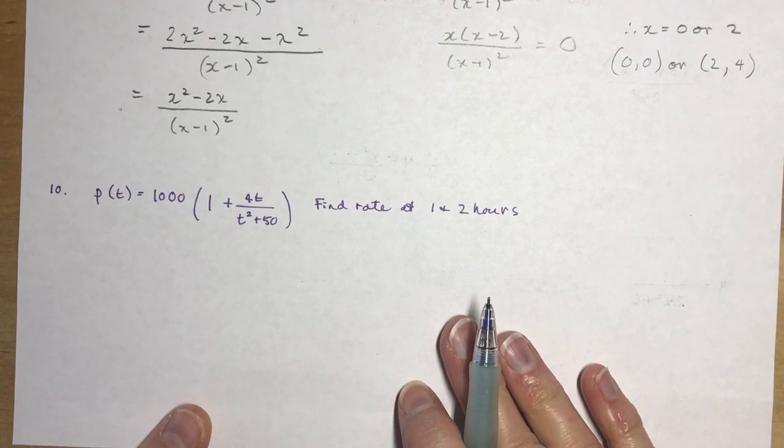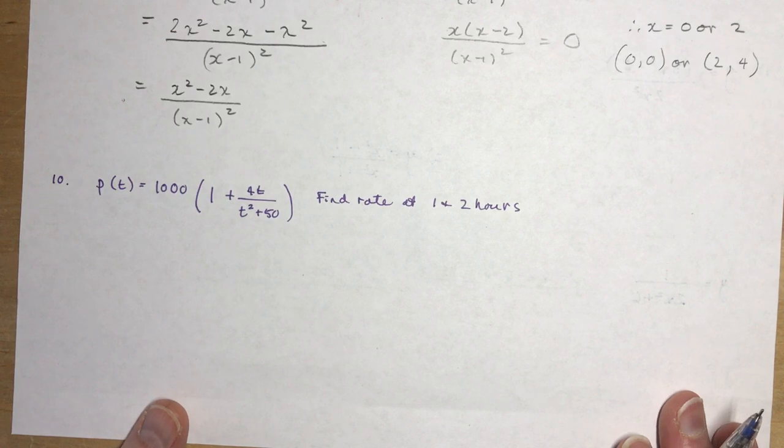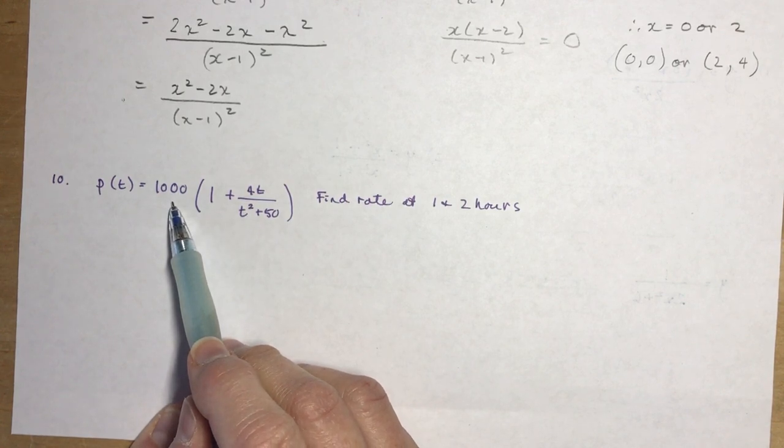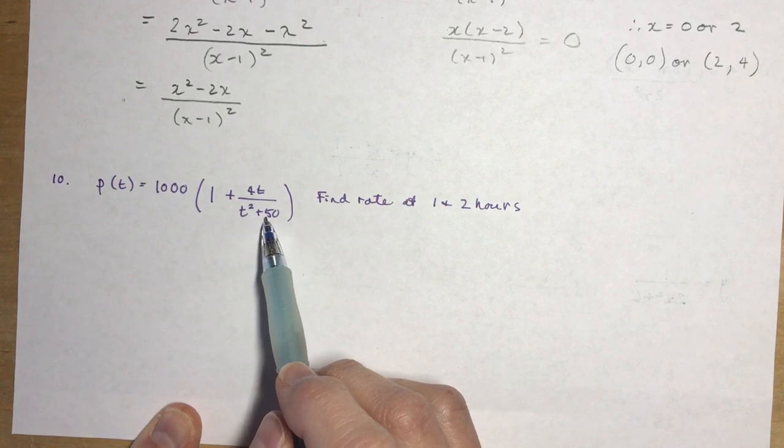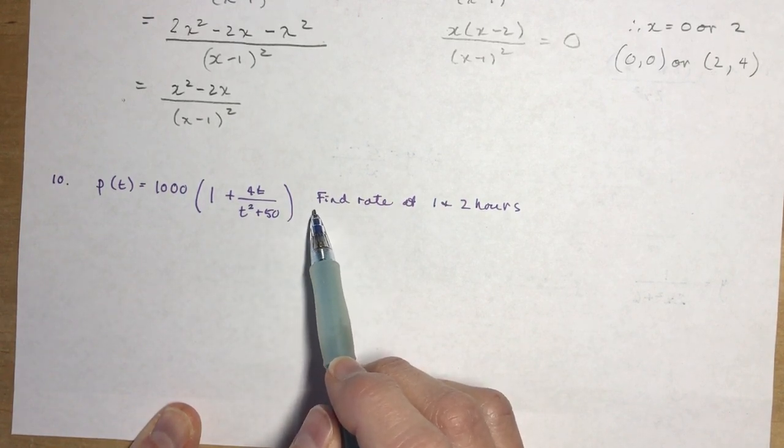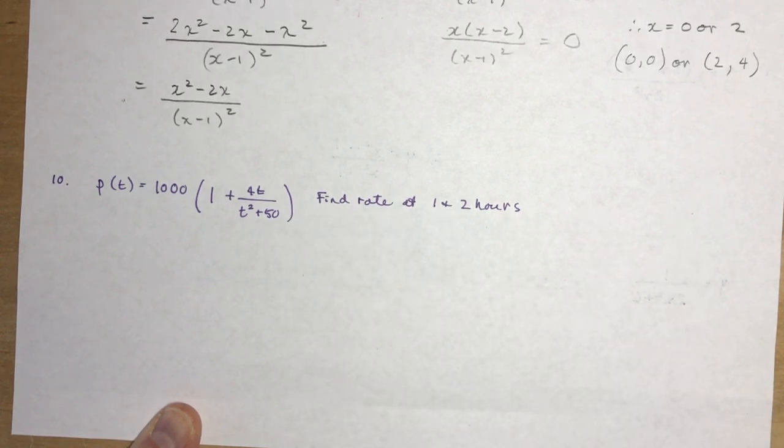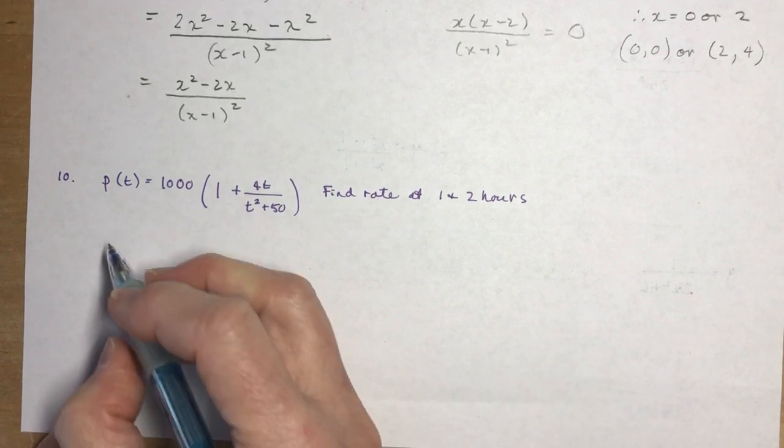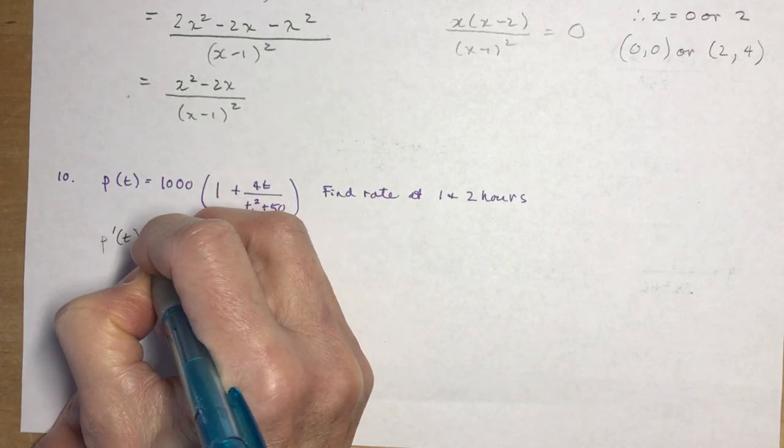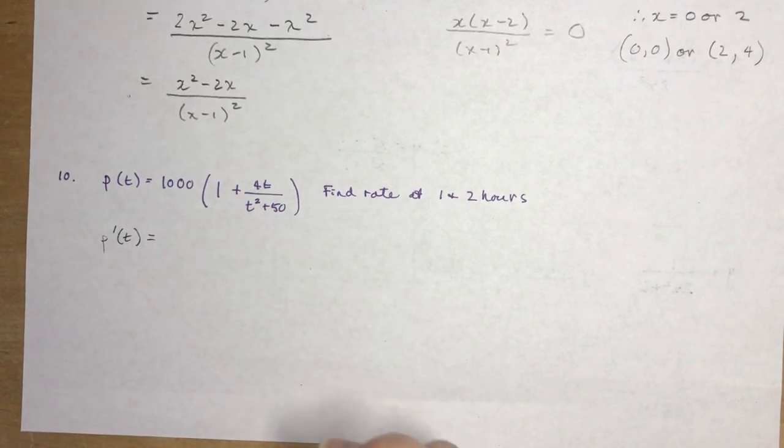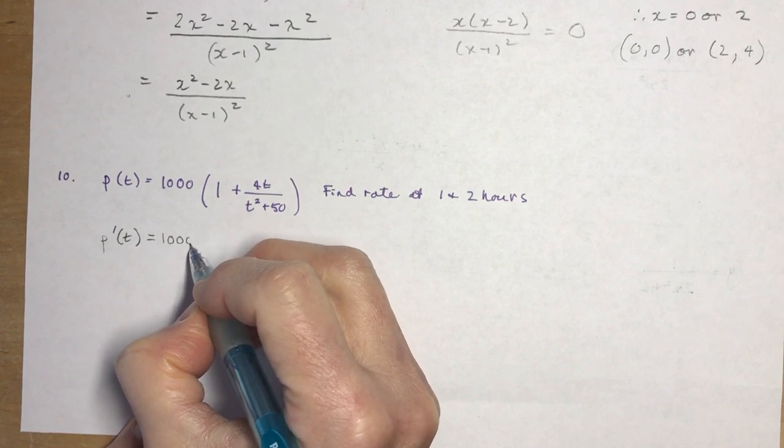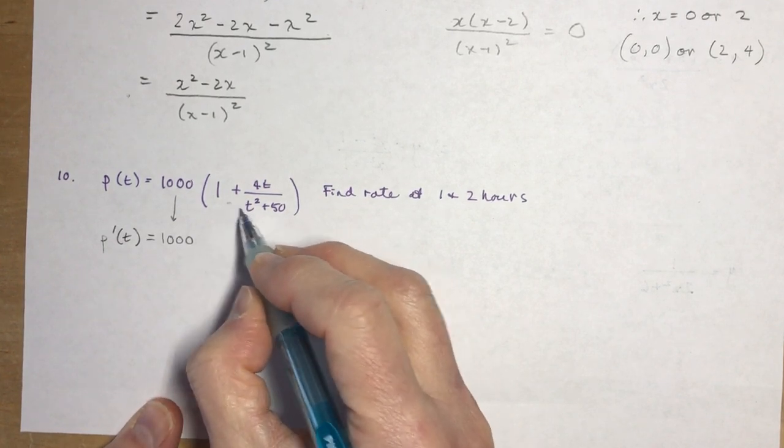A little trickier question - a word problem. An initial population of 1000 bacteria grows in number according to this equation, where t is in hours. Find the rate at which the population is growing at 1 and 2 hours. I need to take the derivative of this. This might seem a little complicated, but it's not as hard as it looks.